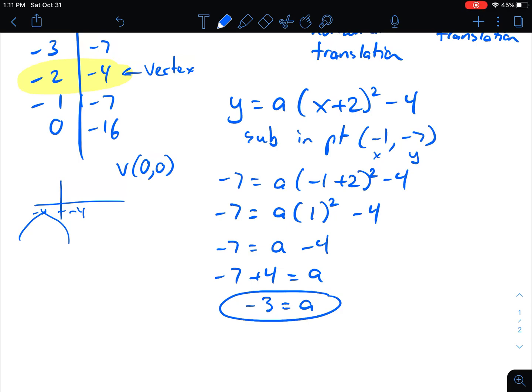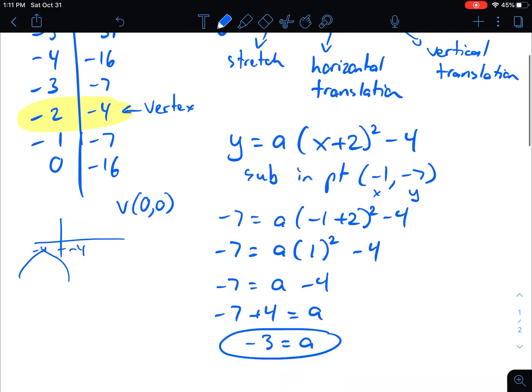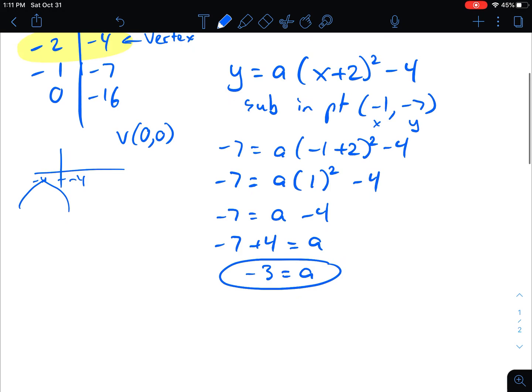So that was the stretch factor. That's the last thing I needed for my equation. Now I know every little piece. I know the a, I know the h, and I know the k. So let's rewrite it as our final answer. Therefore, y equals, the a was negative 3, x plus 2 squared minus 4 is the equation. And that's definitely the right answer for this one.